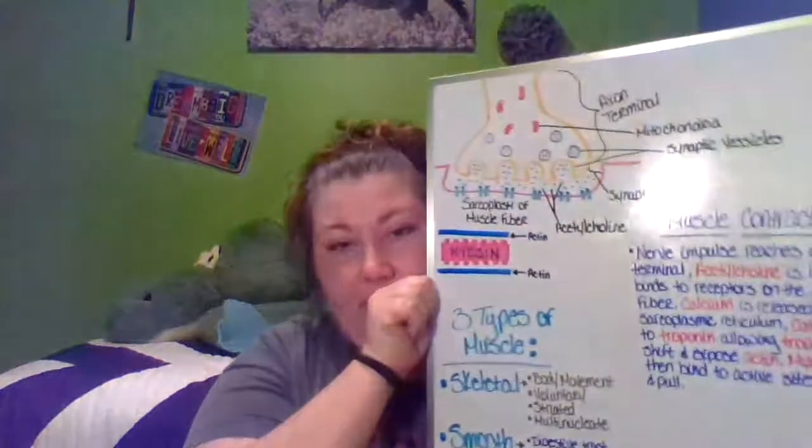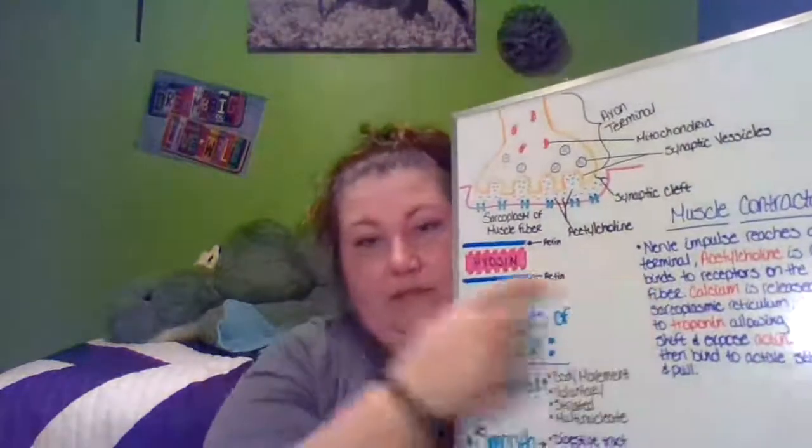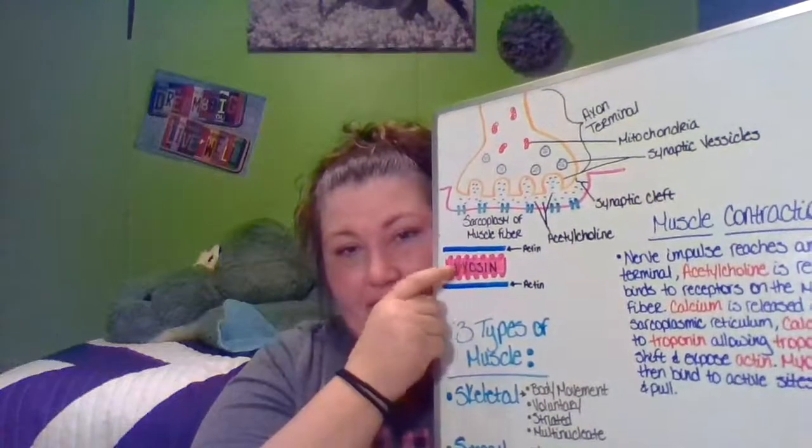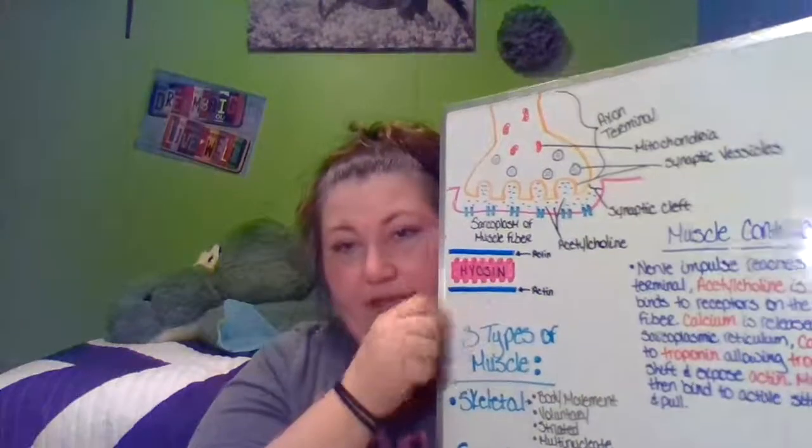First of all, the primary neurotransmitter we're dealing with here is acetylcholine. Our two primary proteins in muscle contraction are actin and myosin. Actin is the thin filament and myosin is the thick filament — myosin is the thick, and the two actins are the thin.